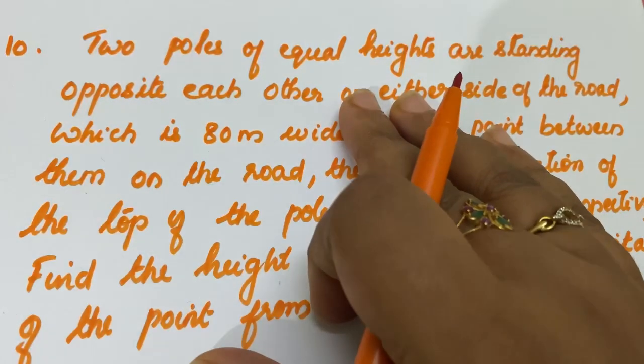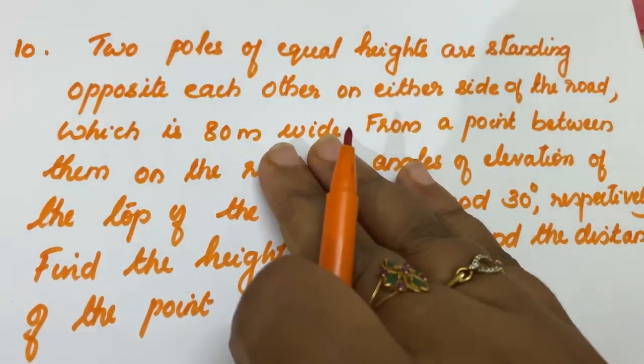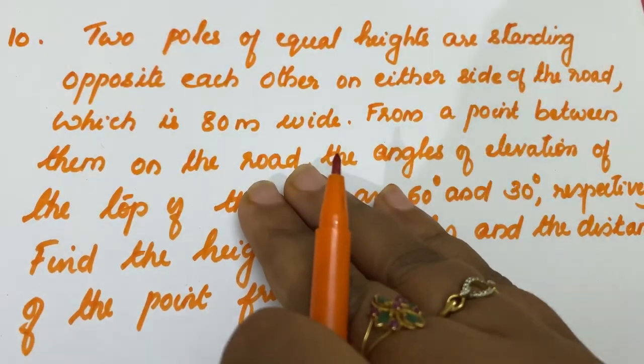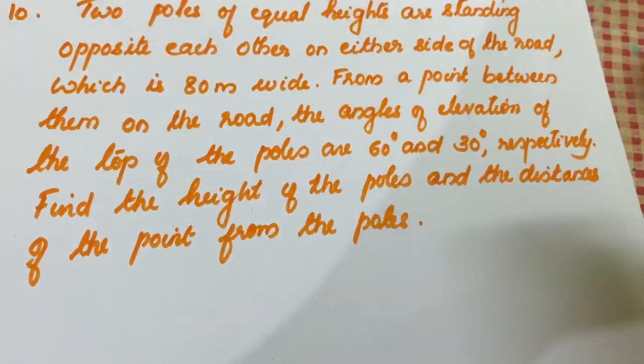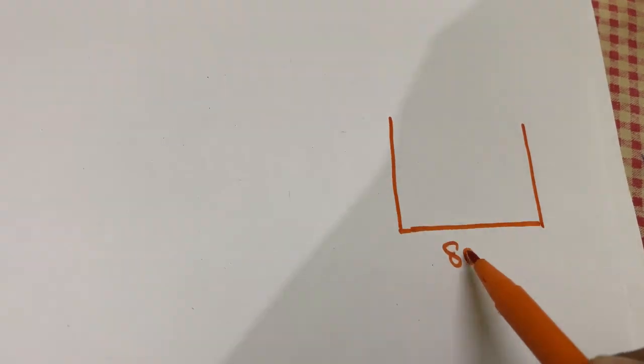The question: Two poles of equal heights are standing opposite each other on either side of the road, which is 80 meters wide. So the road is 80 meters wide.